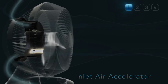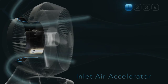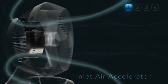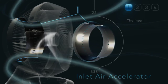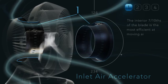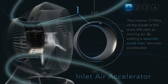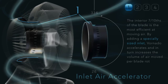The first element is called the Inlet Air Accelerator, which increases the efficiency of the blades. By adding a specially sized inlet, Vornado accelerates and in turn maximizes the amount of air moved as the blades spin.